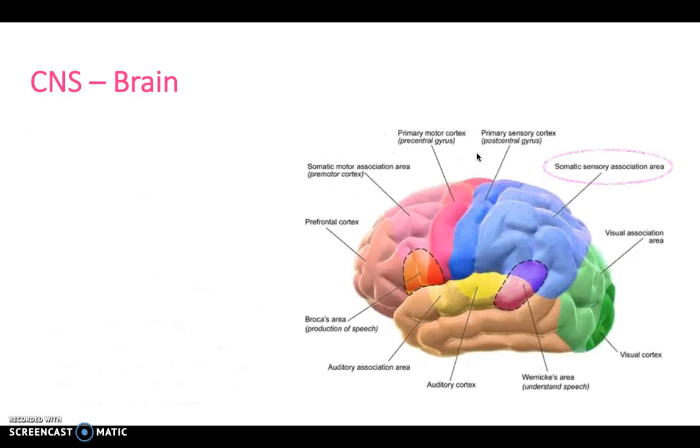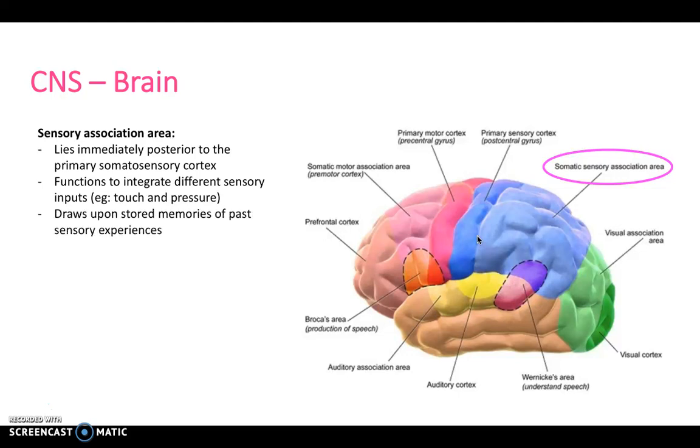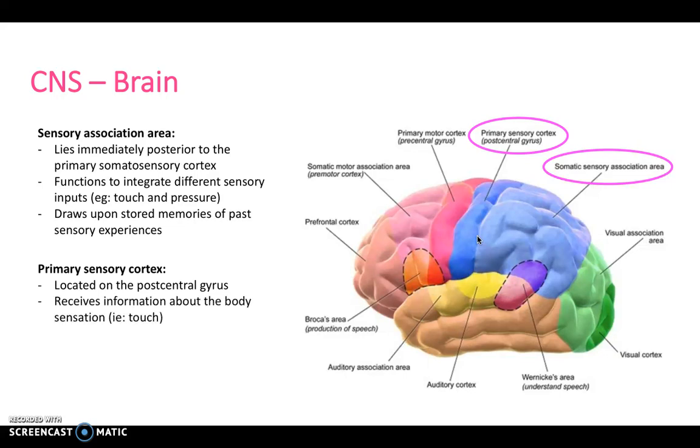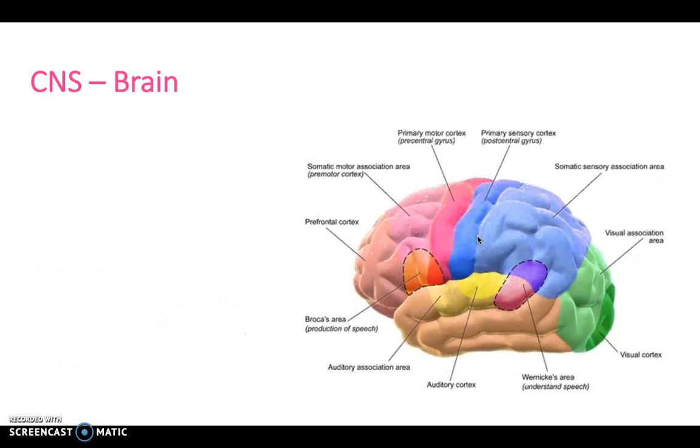We've got a somatic sensory association area and a primary sensory cortex located just behind the central gyrus in the post-central gyrus. The association area integrates different sensory inputs like touch and pressure coming up through the spinal cord, and it draws upon stored memories of past sensory experiences. The primary sensory cortex receives information about the body's sensation, and this area of the cortex again relates to the sensitivity of the body part, which is to do with the homunculus.